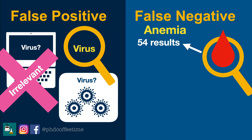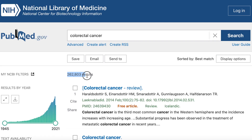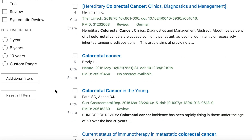You can also have false negatives. For example, if you're searching for publications related to anemia with the US spelling, you're going to miss the other half that are spelled with the UK spelling with an A. It creates immense anxiety.